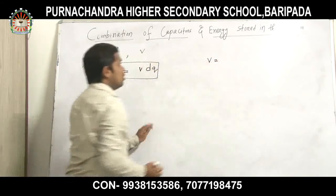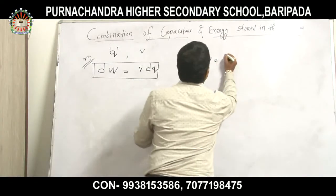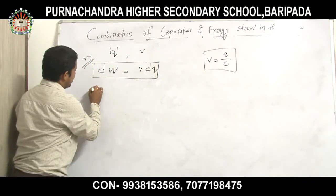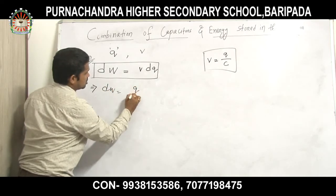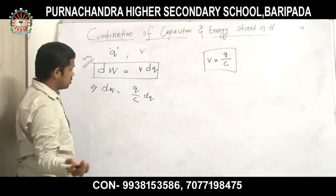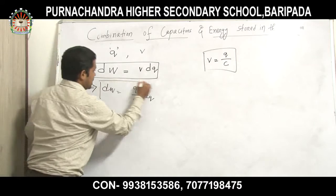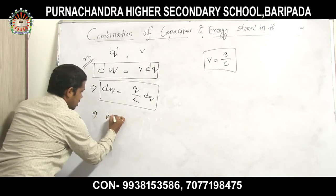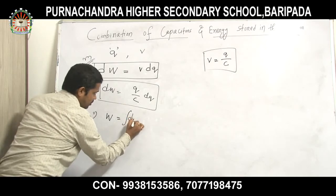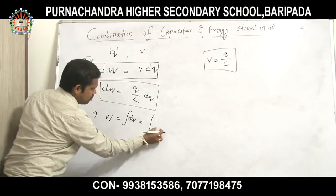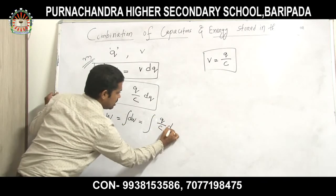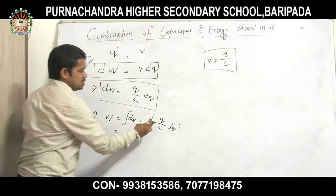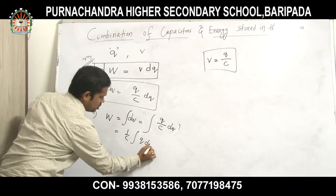From the capacitance formula, V = Q/C. So DW = (Q/C)·dQ. To find the total work done, we integrate: W = ∫(Q/C)dQ = (1/C)∫Q·dQ. The integration of Q·dQ gives Q²/2, so total work done W = (1/2)(Q²/C).